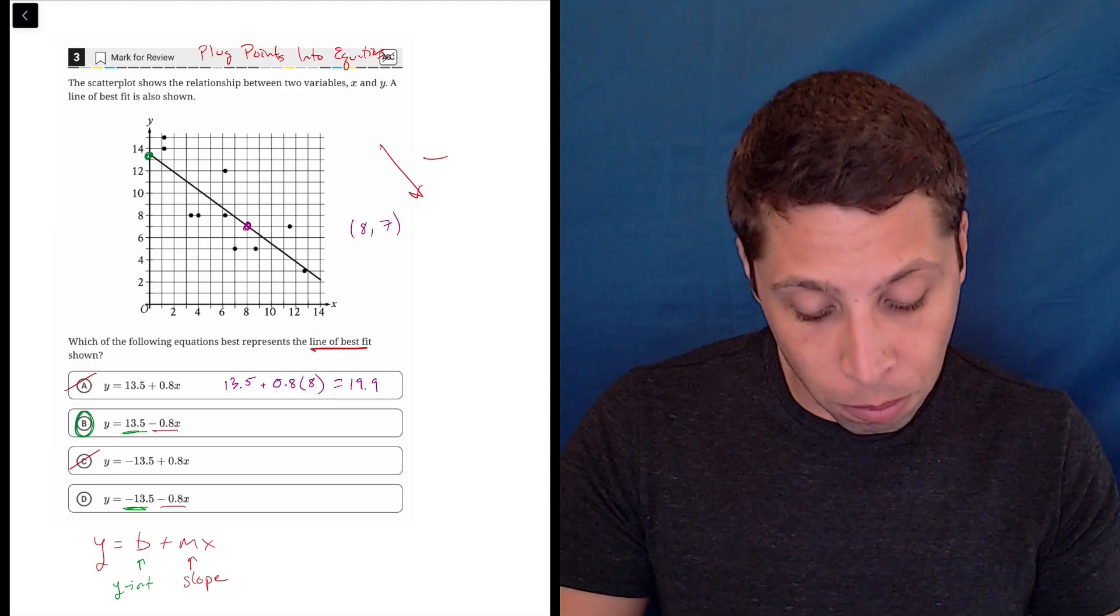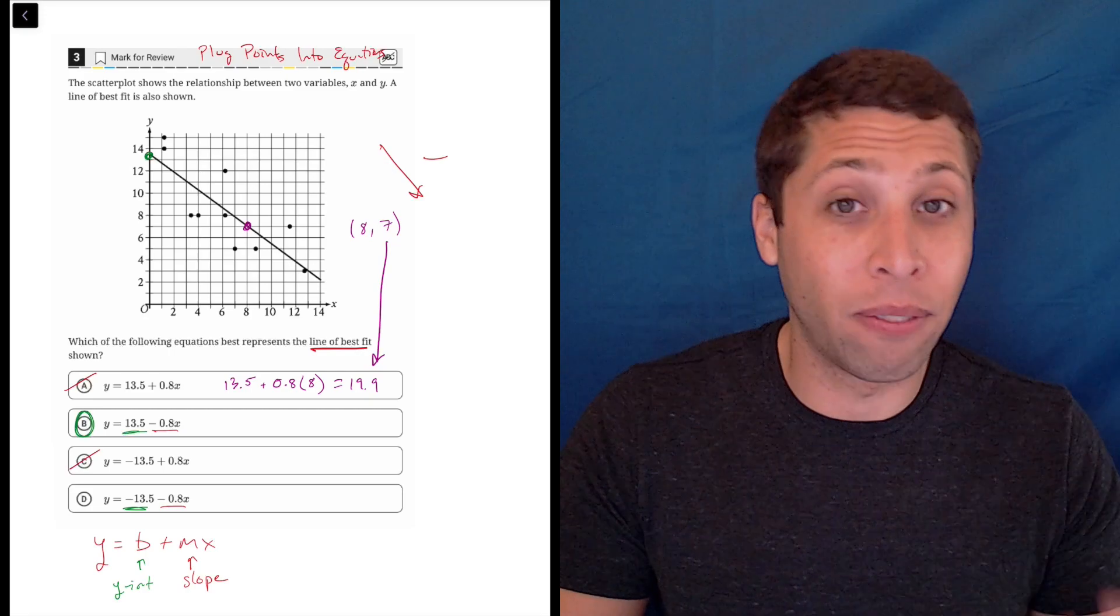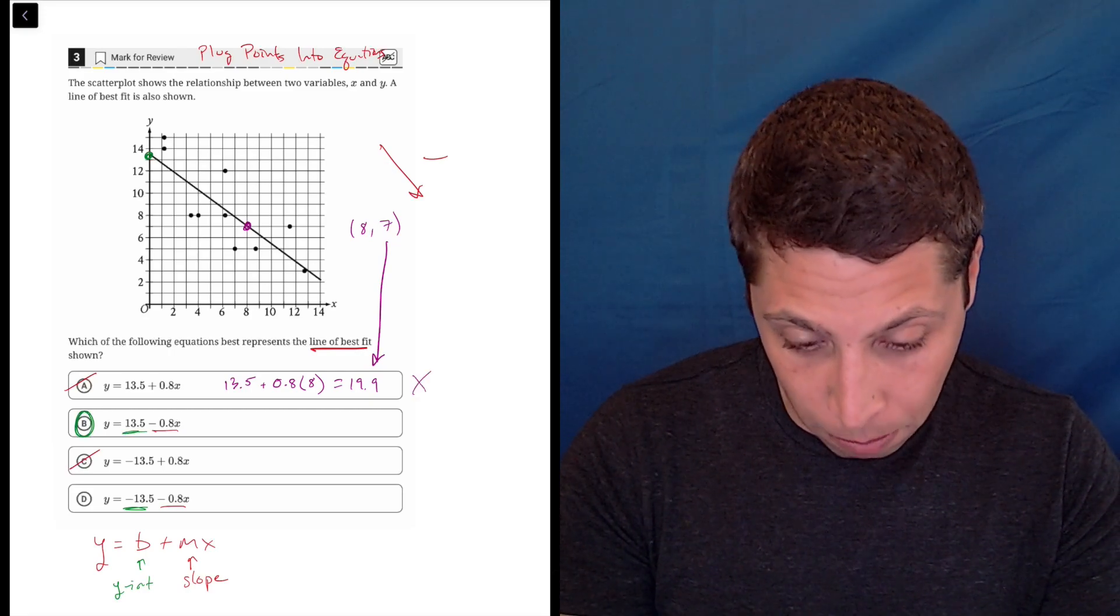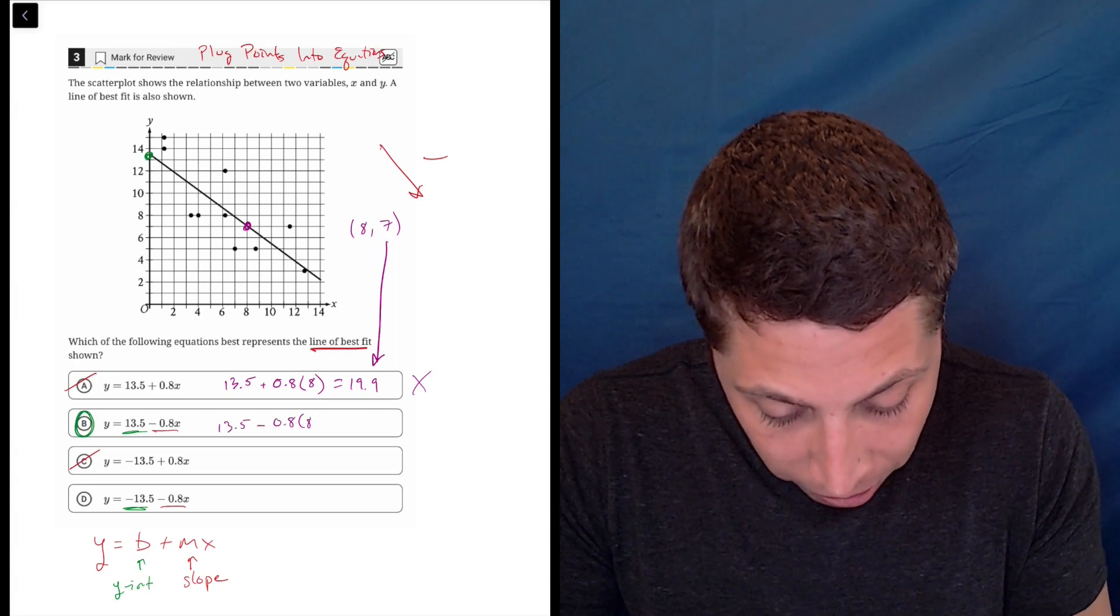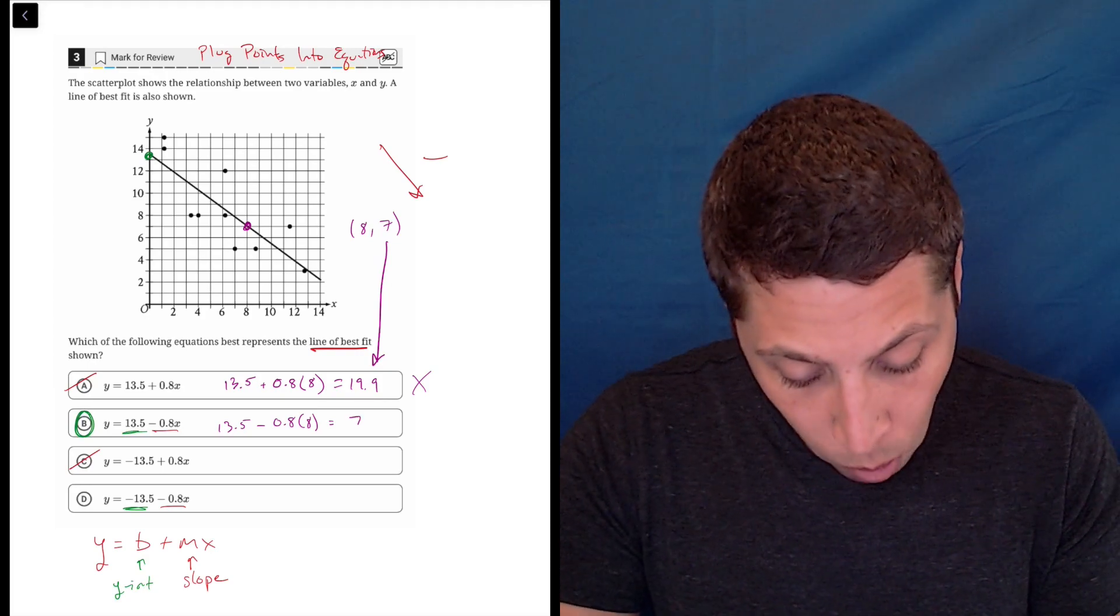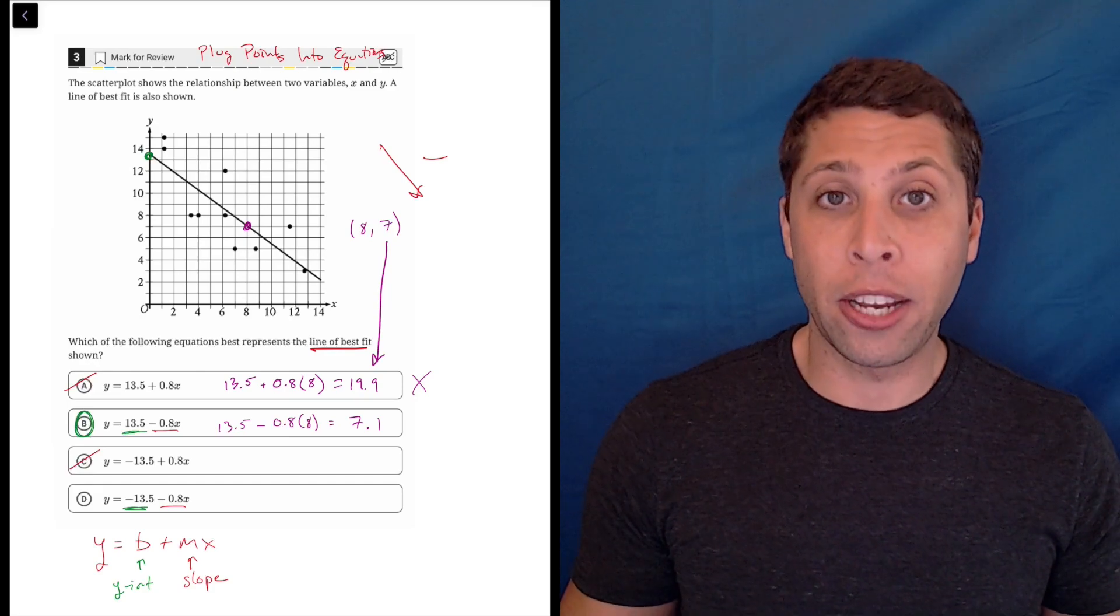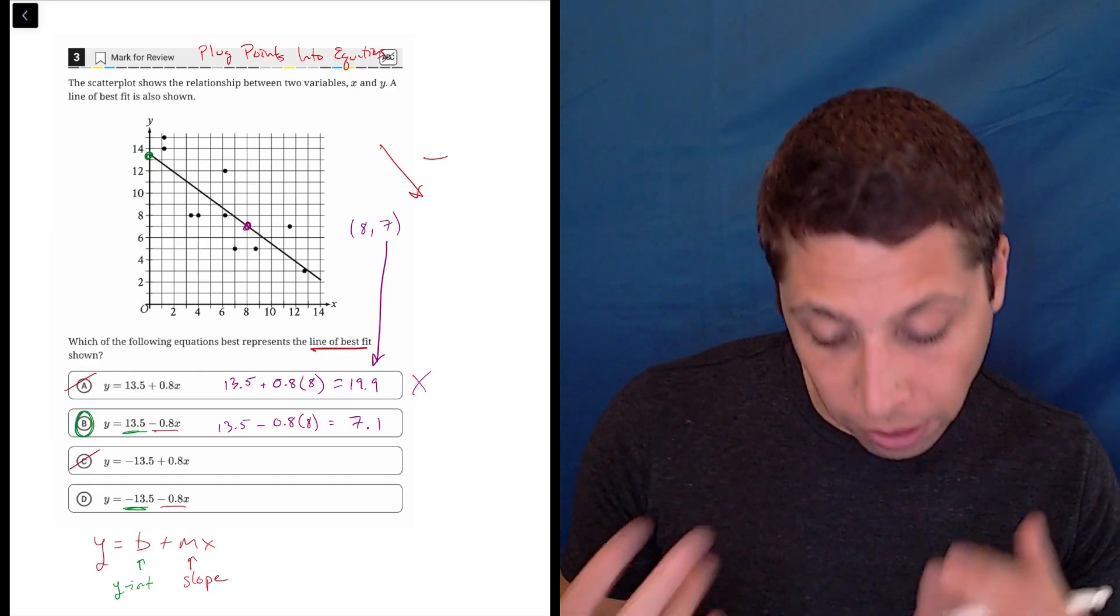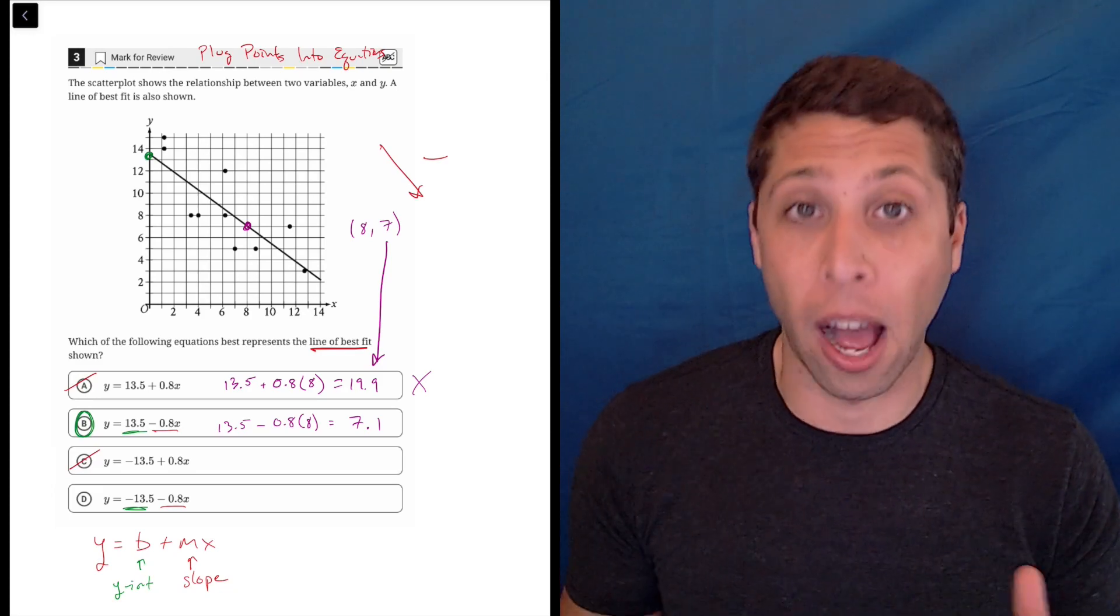13.5 plus 0.8 times 8 would be 19.9. So we know now that this is not the right answer because what we were supposed to get was 7, right? So the fact that we got a very different number is not good. Now if we do that for the right answer, 13.5, here I'll write it too, 13.5 minus 0.8 times 8, we get not quite 7, 7.1, but that's okay because we did estimate here and so it makes sense that we would be a little off, right? I'm kind of looking at where the line hits the grid, but would I really notice with my eye if it was a 0.1 difference? Probably not.